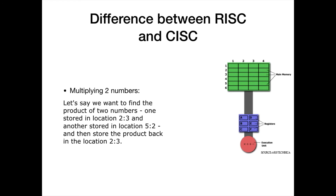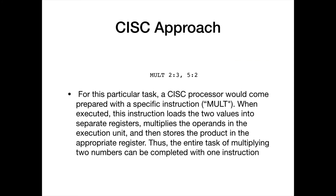Let's talk about the difference in approaches of RISC and CISC. On the right side is a diagram representing the storage scheme of a generic computer. The main memory is divided into locations numbered from row 1, column 1 to row 6, column 4. The execution unit is responsible for carrying out all computations. Let's say we want to find the product of two numbers: one stored in location 2,3 and another stored in location 5,2, then store the product back in location 2,3.